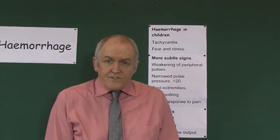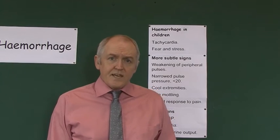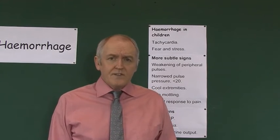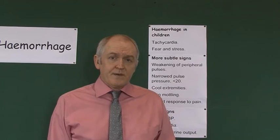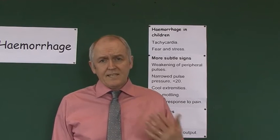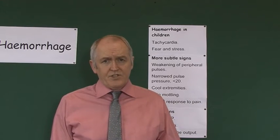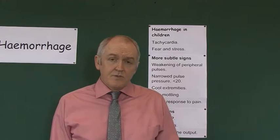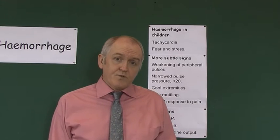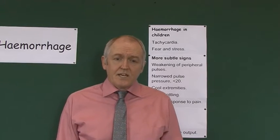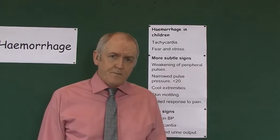In children, as we've seen in adults, there's a narrowed pulse pressure. This can go down to less than 20 millimetres of mercury in children, indicating haemorrhage — the reduced difference between the systolic and the diastolic blood pressure.